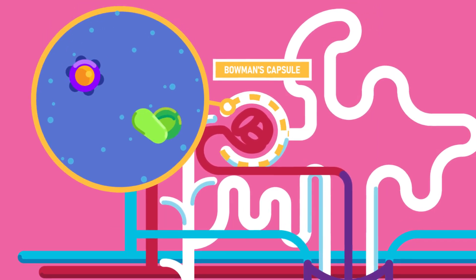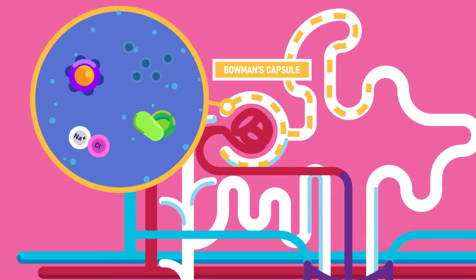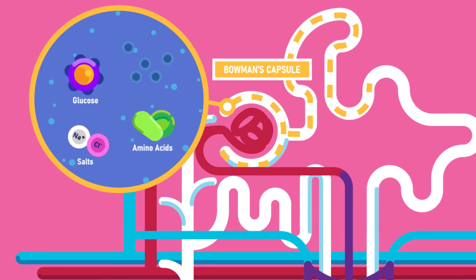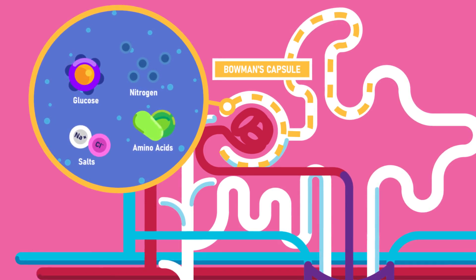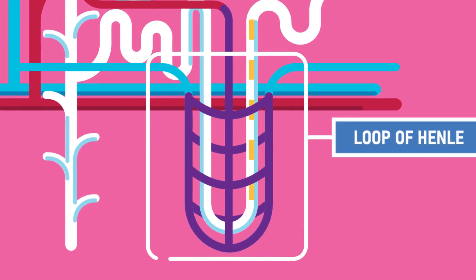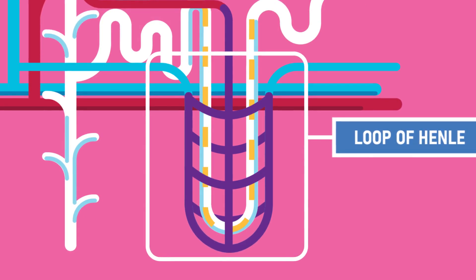The Bowman's capsule collects filtrate from the glomerulus, which contains glucose, amino acids, salts, and nitrogenous waste products. The filtrate is sent off along a tube that forms the loop of Henle.